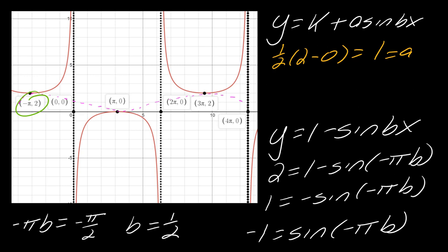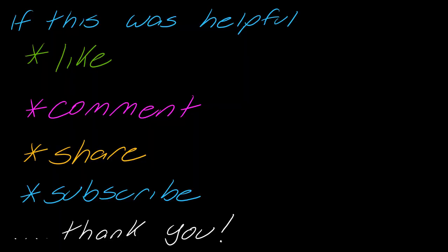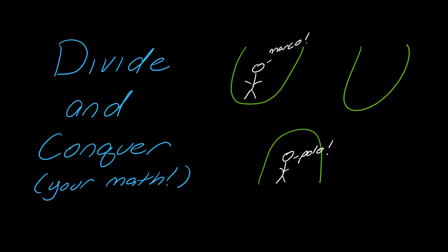And so now we actually have figured out what our sine function is. Our sine function is 1 - sine(1/2 x). And then I just have to change that to be 1 - cosecant(1/2 x). And so there's our final answer. So those are a little tricky. So take your time with those. Feel free to ask any questions or leave any comments if you have them. And otherwise, thanks for watching, guys. I'll catch you in the next video.